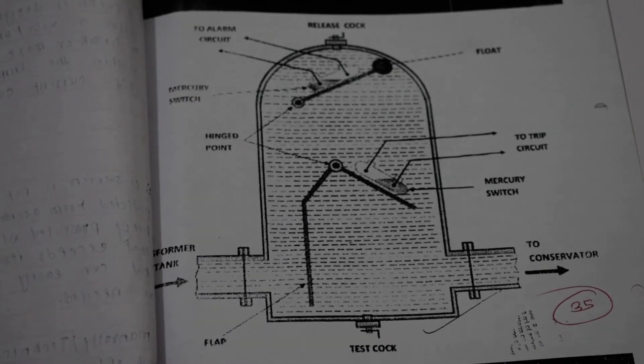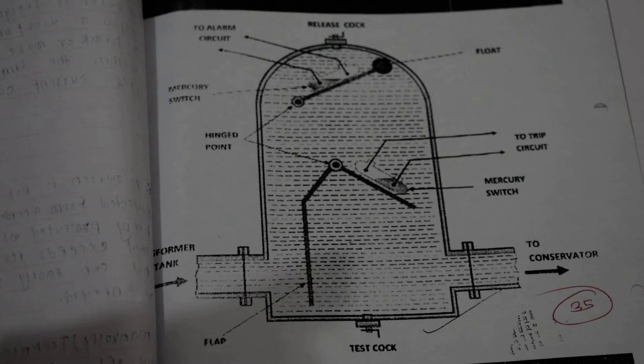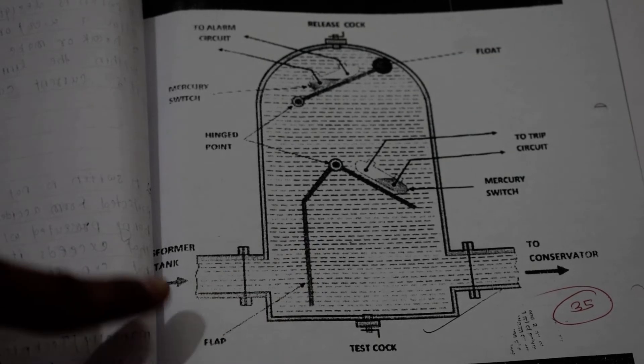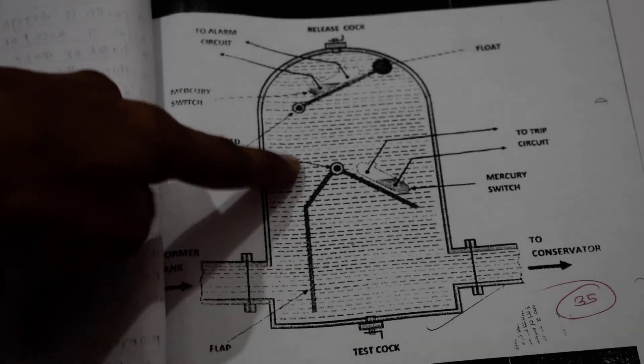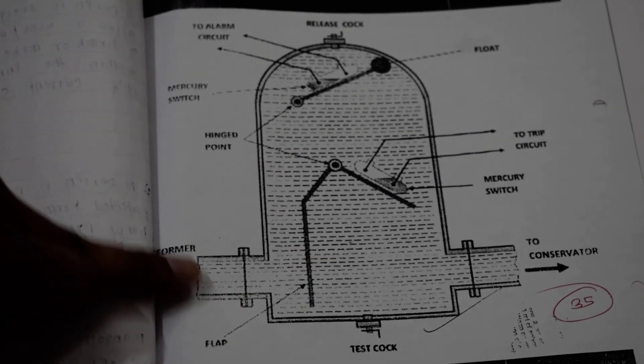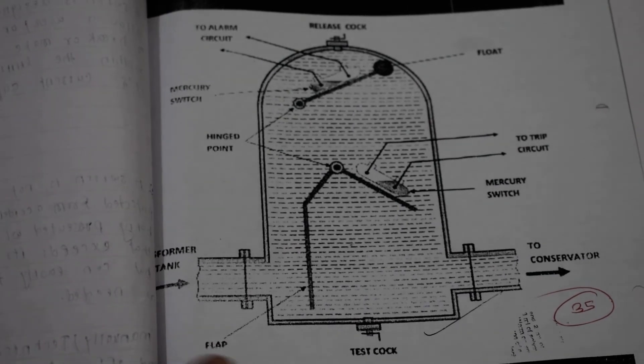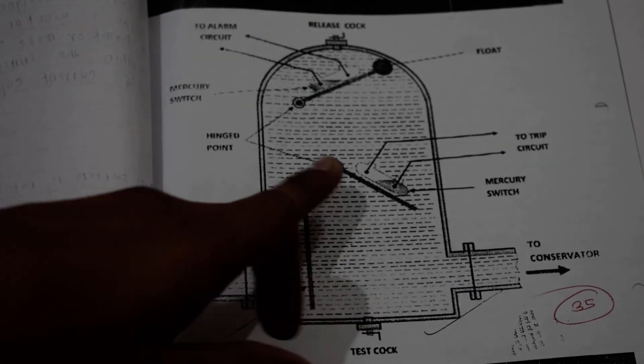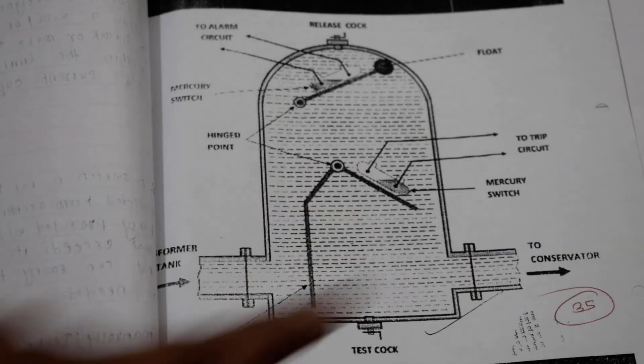The oil is warm and many vapors form with very high pressure. When pressure is low, the vapor travels up. But when it comes with a lot of force, it will strike directly on the flap. The flap will strike the mercury switch on the trip circuit.